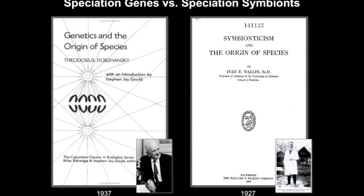Moving on to the time of the modern synthesis, I present Genetics of the Origin of Species, written by Theodosius Dobzhansky, in which he starts to lay down the foundation for understanding speciation. Dobzhansky is credited with the biological species concept in part, as well as the Dobzhansky-Muller model of hybrid incompatibilities. What's not so well known is that 10 years prior to Dobzhansky's famous book, there was a guy named Ivan Wallin, a professor in Colorado, who published a book called Symbionticism and the Origin of Species. The foundation for evolutionary biology and genetics is established in 1937 with Dobzhansky's book.